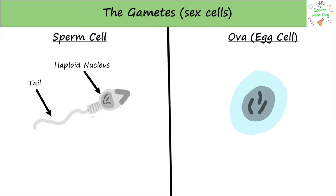In the head of the sperm cell is the acrosome, which contains enzymes to help break down the egg cell. The head is also strengthened to help with this. Just below the head, the cell has lots of mitochondria to give it energy to help reach the egg cell.